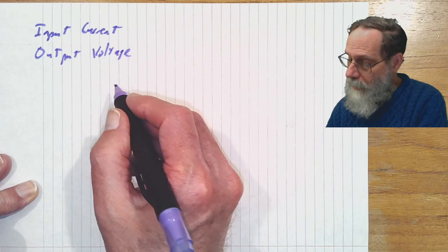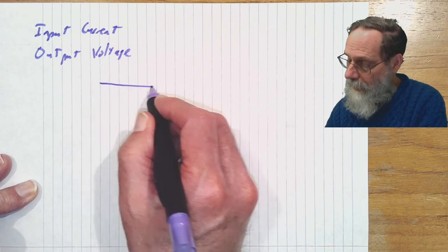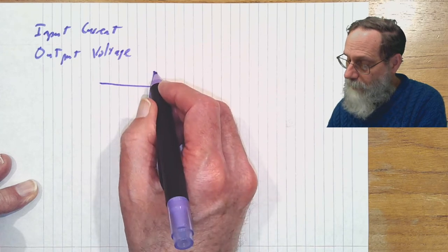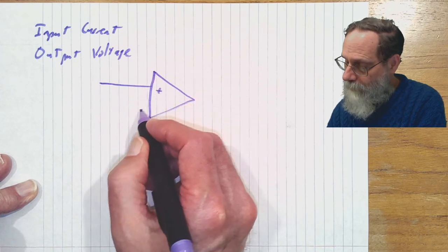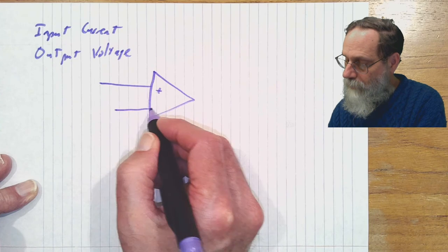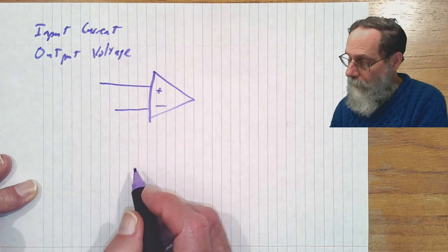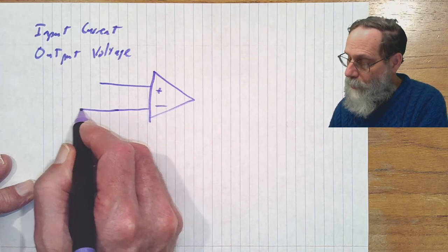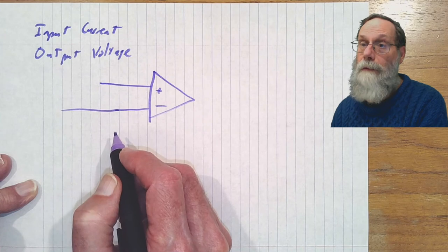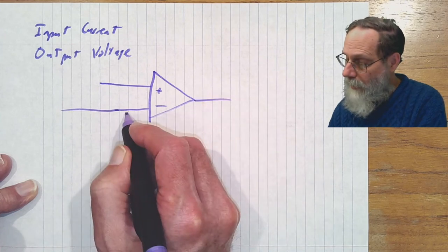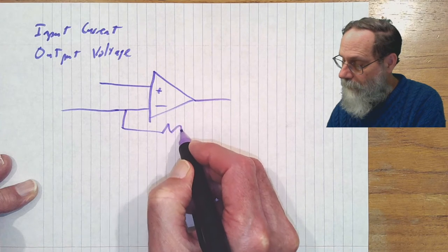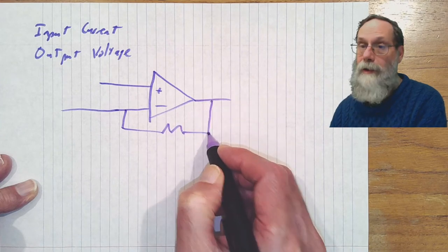The way we make a transimpedance amplifier is a negative feedback amplifier where the input goes directly into the negative input of the amplifier and then we have a feedback resistor.